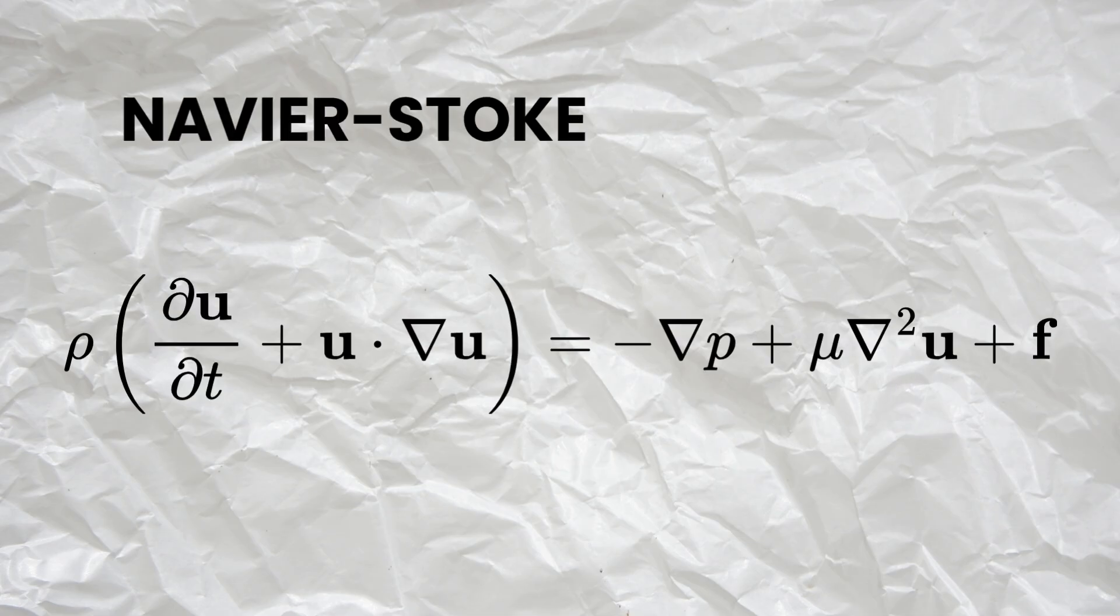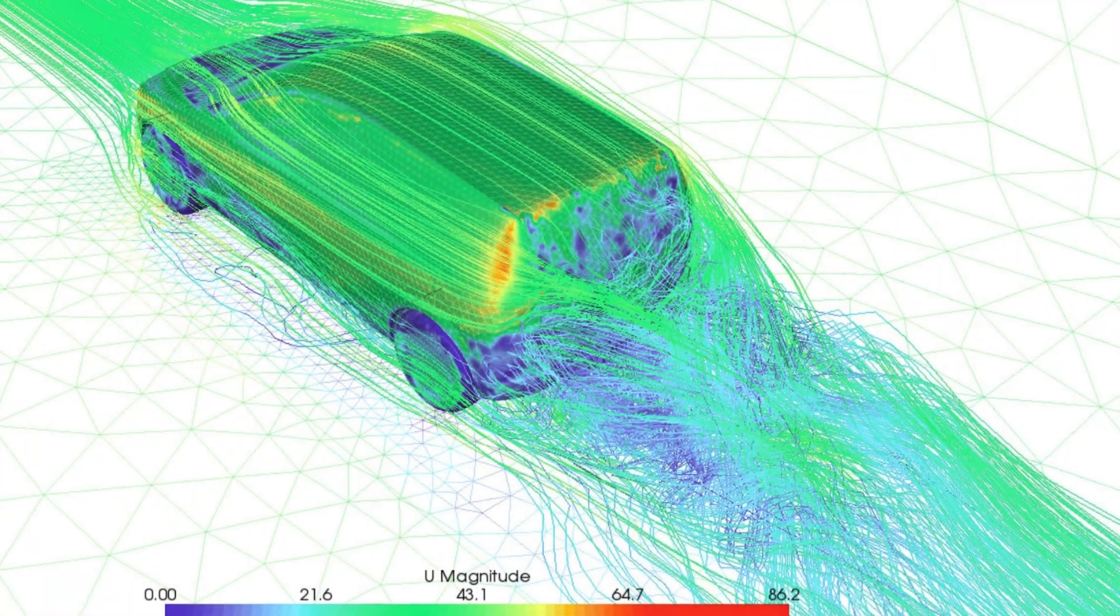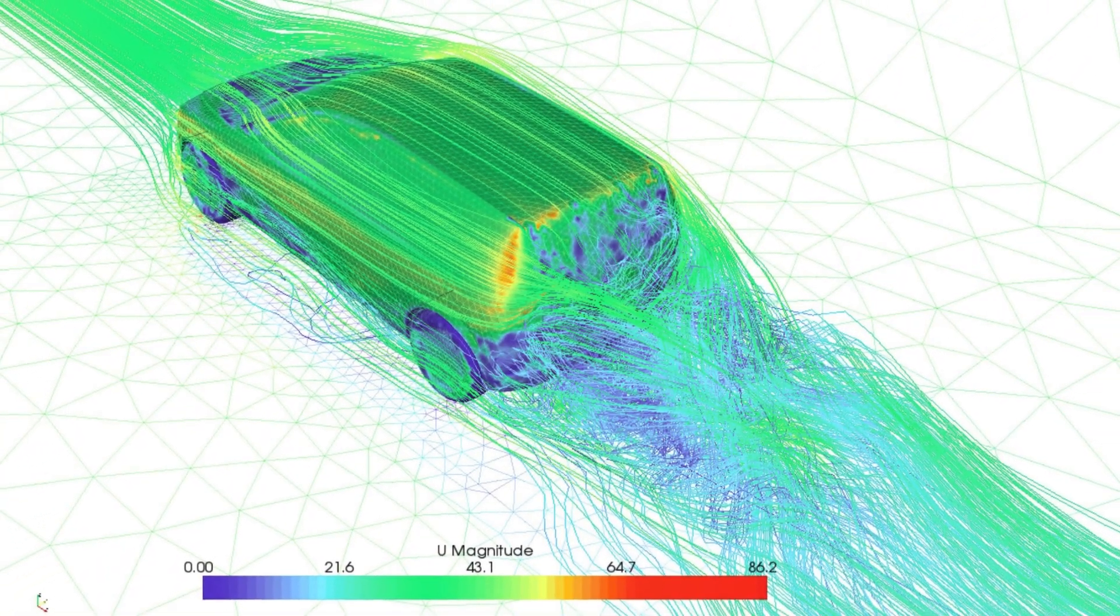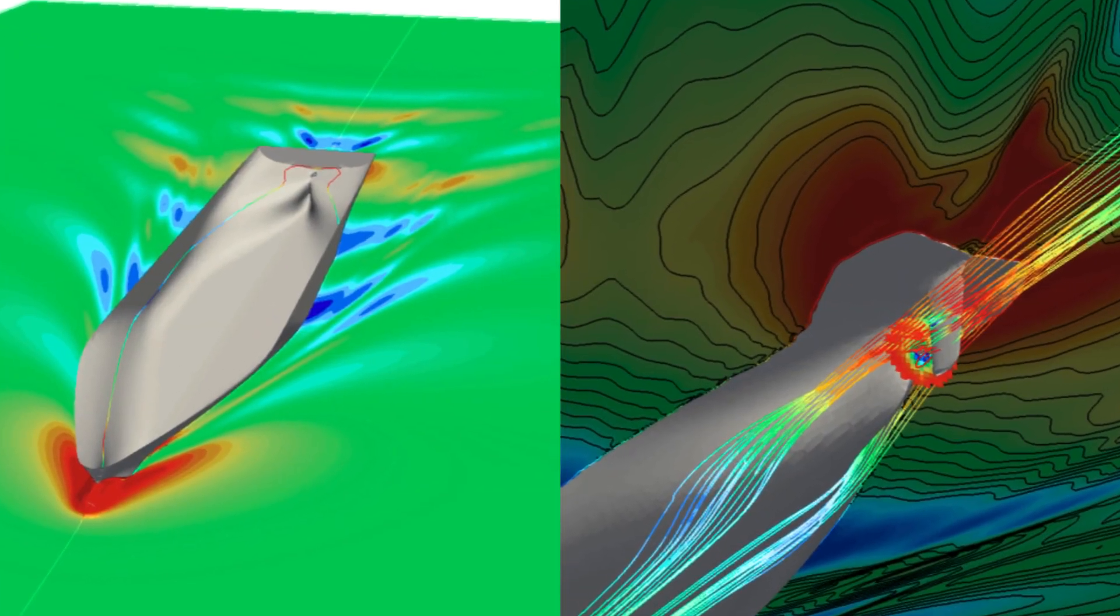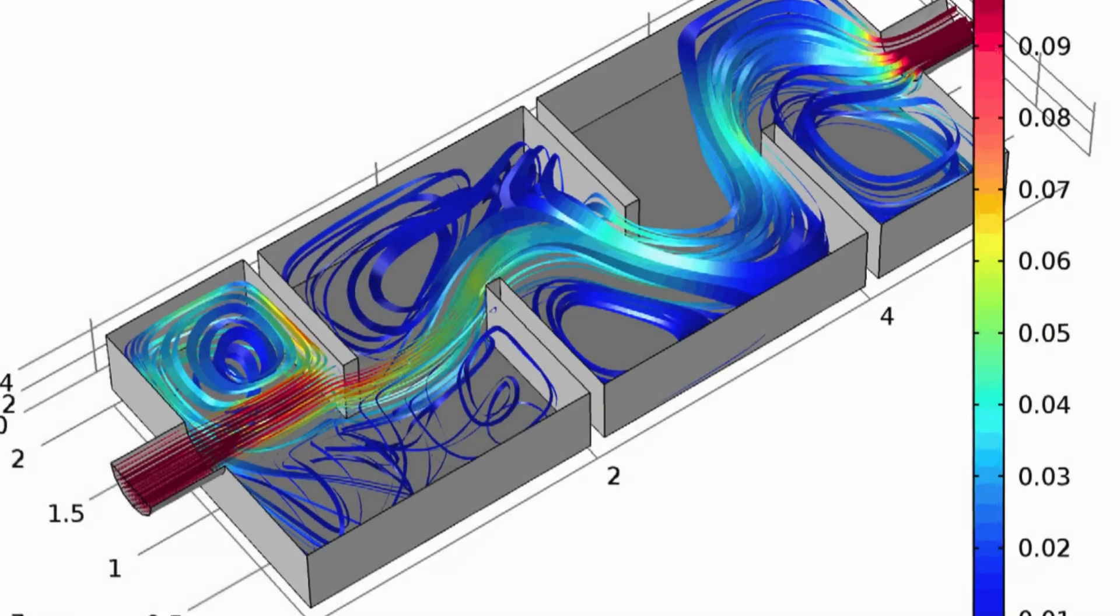One example is the Navier-Stokes equation. Even though we don't yet have a general theoretical solution, we can simulate its behavior using numerical methods, which has a huge impact in physics, engineering, and meteorology.